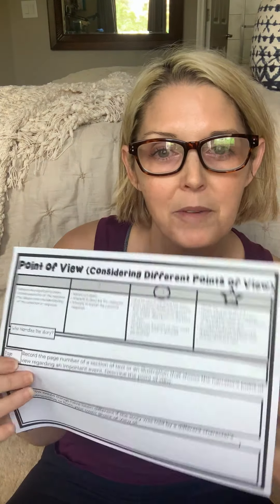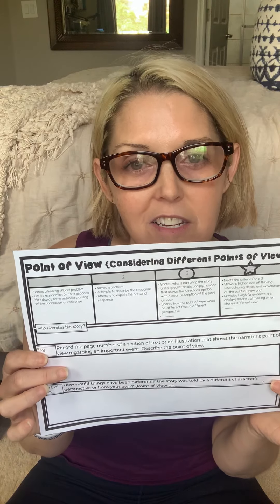Describe the point of view — that's what you're going to do in the next box. And then the final one is how would things have been different if the story was told by a different character's perspective, or from your own point of view. You can either say it from a different character or from your own, and that also shares how the point of view would be different from a different perspective. In order to get a four, there's a little bit more criteria, but that's what you're reaching for for the three. I'm going to give this one away for free, so I will post this soon. That's what we're going to focus on today: point of view.